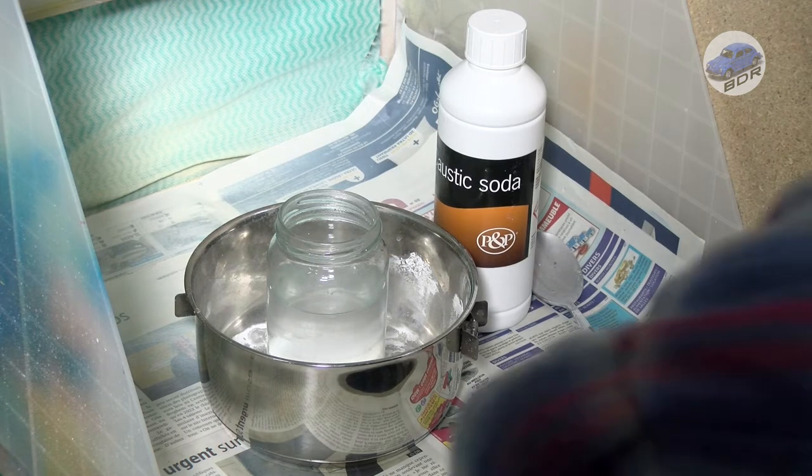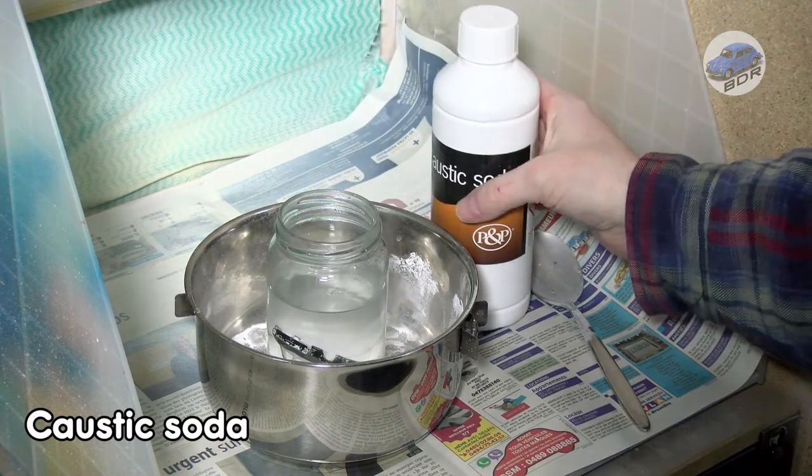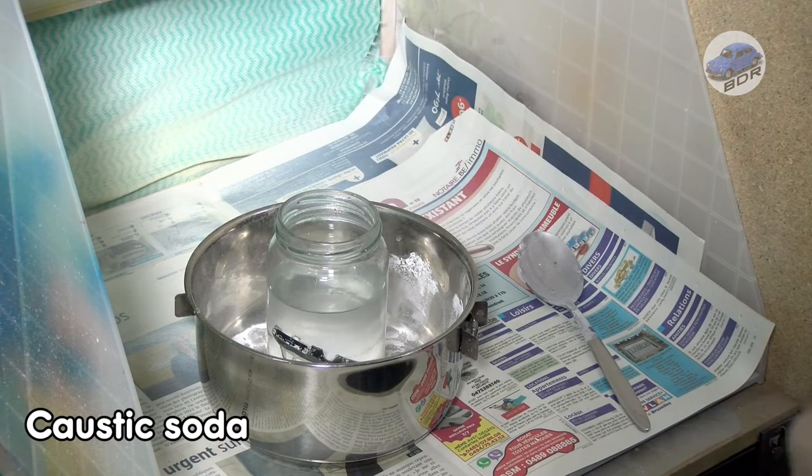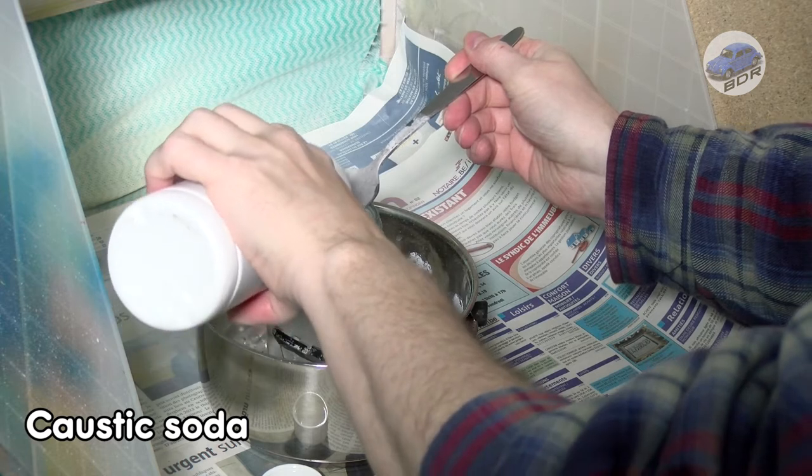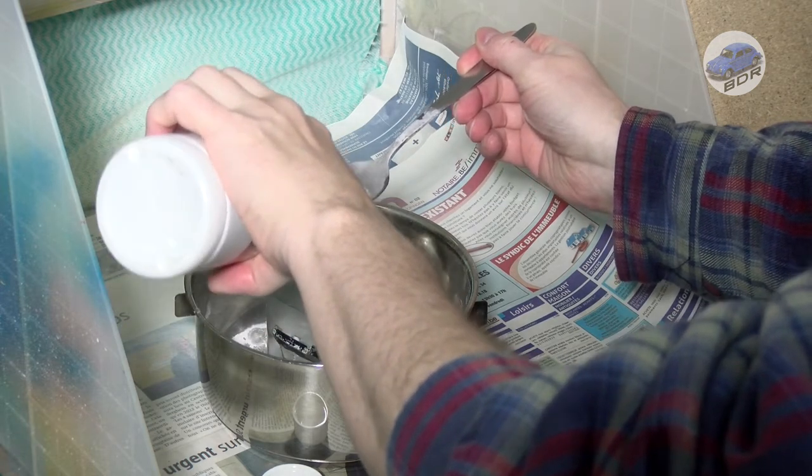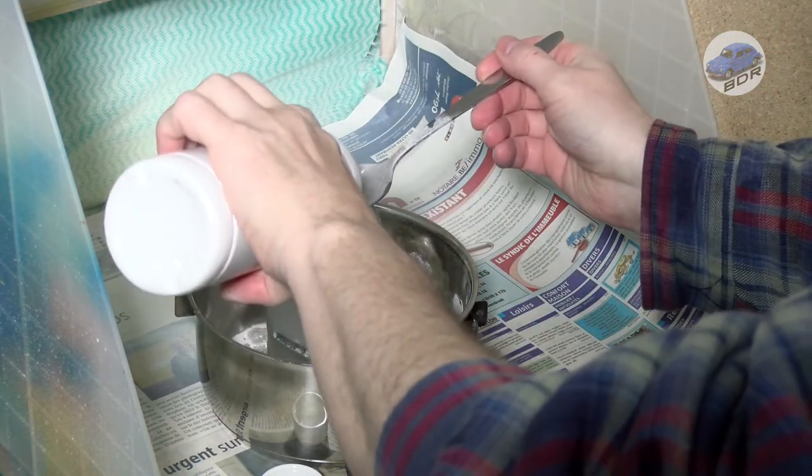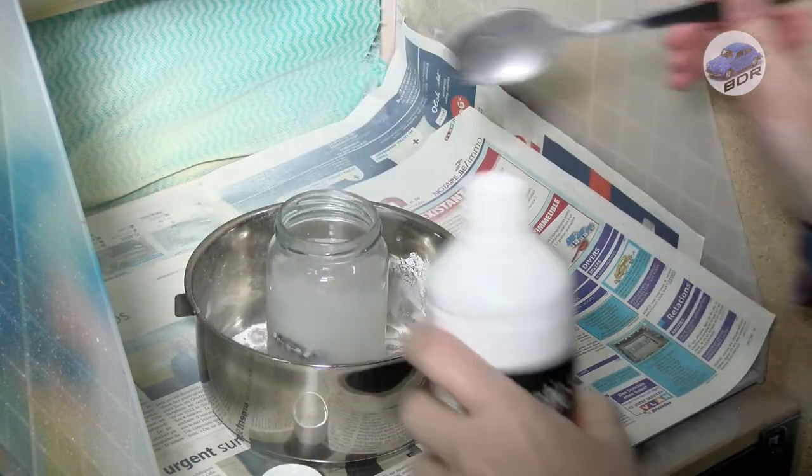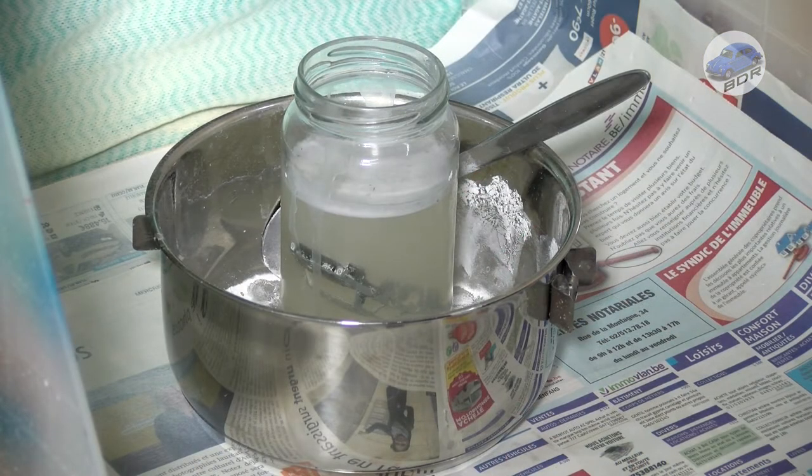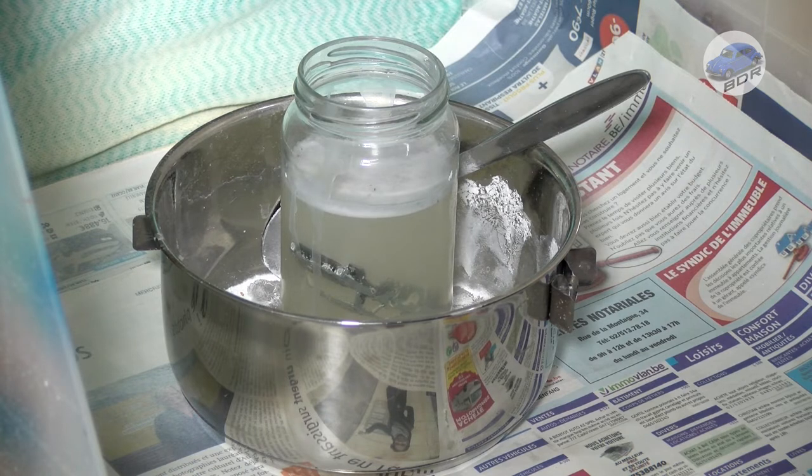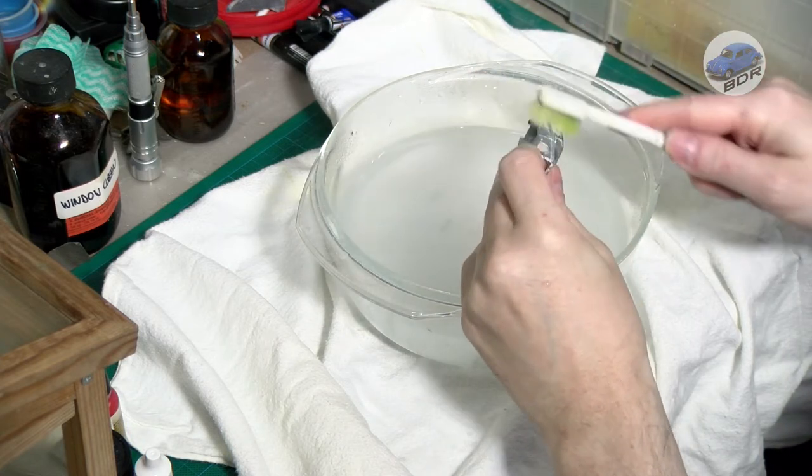Now it's time to strip the paint. I put the metal body in a jar of boiling water and add two tablespoons of caustic soda. After about 10-15 minutes the paint has come off and I brush away the last remnants with a toothbrush in warm water.